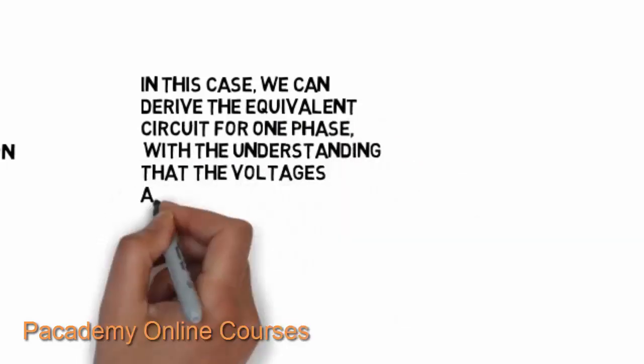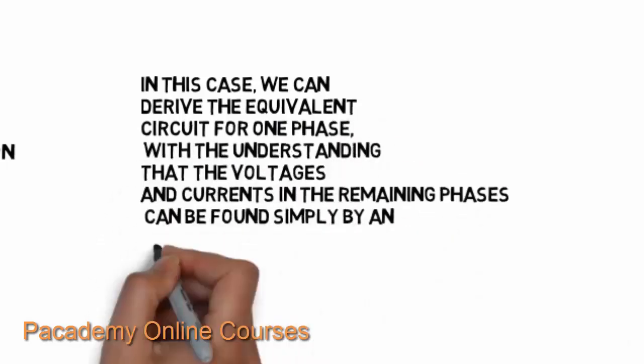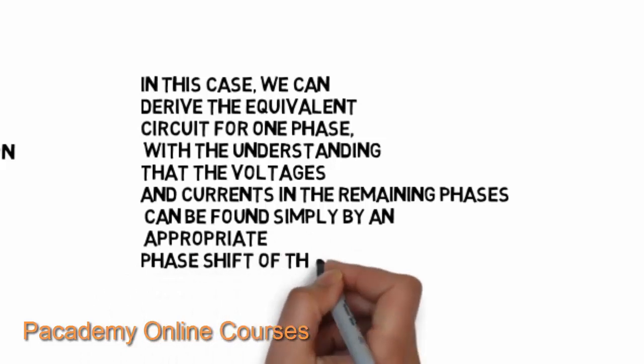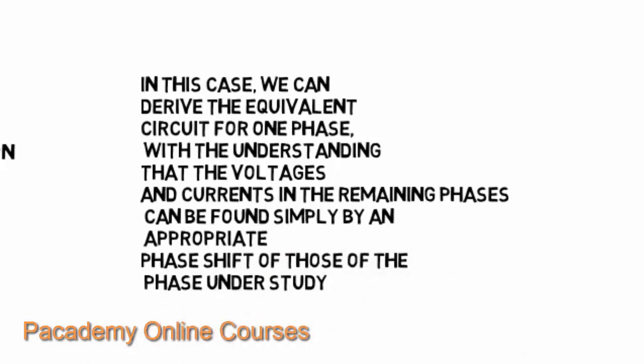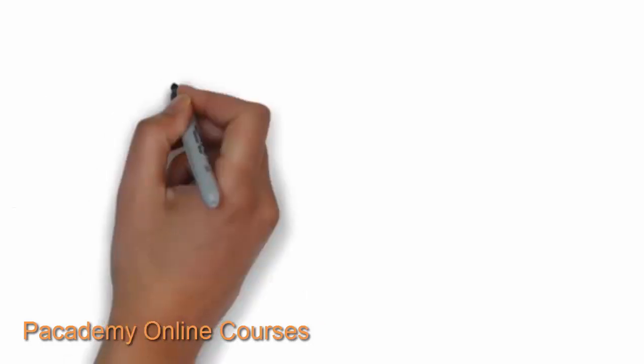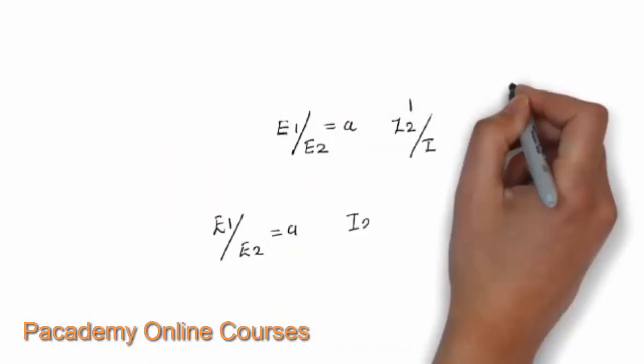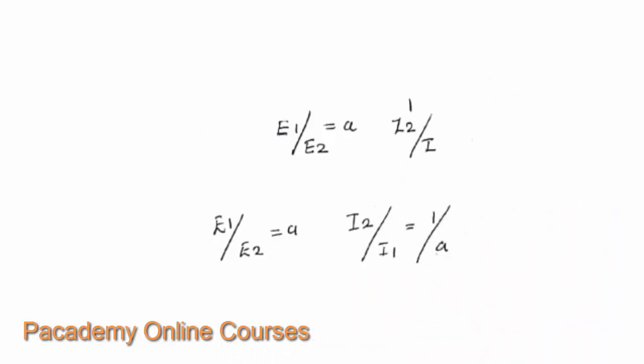We can derive the equation of the equivalent circuit for one phase, with the understanding that the voltage and current in the remaining phases can be found simply by an approximate phase shift of those of the phase under study. The equivalent circuit is found by considering the resistance, reactance, and other parameters per phase.